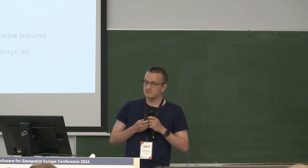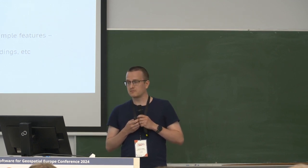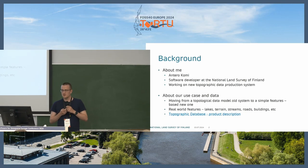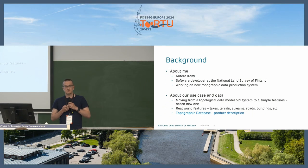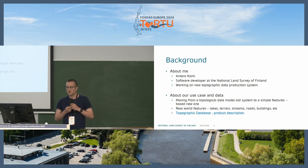About our use case: we are moving from a topological data model old system to a new simple features based one. Our data includes features like lakes, terrain, streams, roads, buildings — all the kinds of stuff you find on maps. Here's a link to our database product description. It's open data, so you can find more information about the data there.